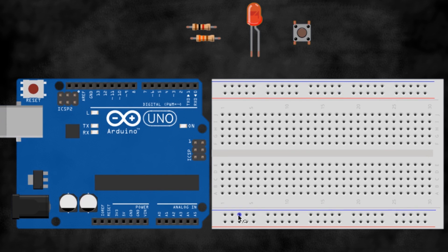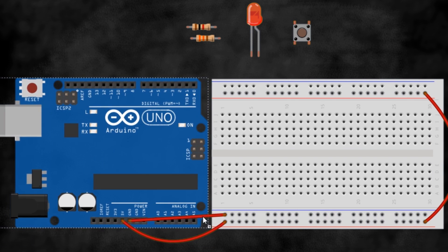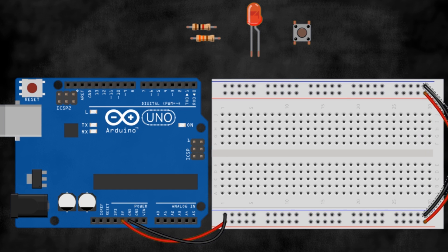Let's start by connecting the power pins from the Arduino to the breadboard rails as usual. Next, place the button anywhere between the two sides of the breadboard.